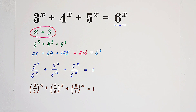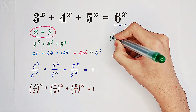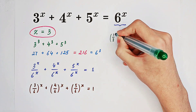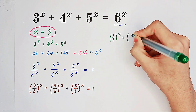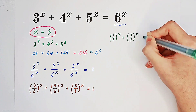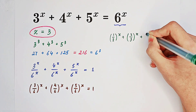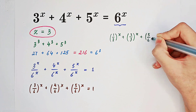And of course we can simplify the left-hand side. 3 over 6 is one half, 4 over 6 is two thirds, and 5 over 6 is five sixths. So we have (1/2) to the power of x plus (2/3) to the power of x plus (5/6) to the power of x equals 1.